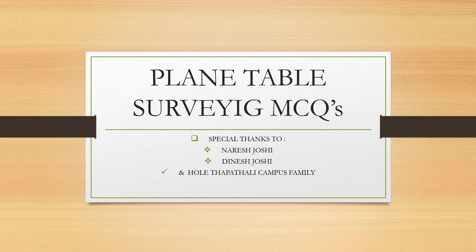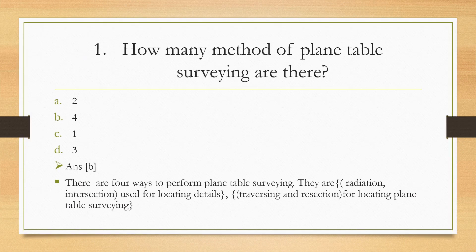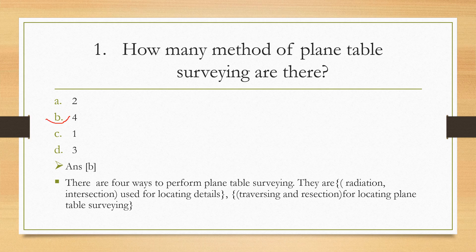Our first question goes like this: How many methods of plane table surveying are there? Two, four, one, or three? The right answer is four. There are four ways to perform plane table surveying. They are radiation and intersection, which are mostly used for locating details, and traversing and resection for locating in plane table surveying.